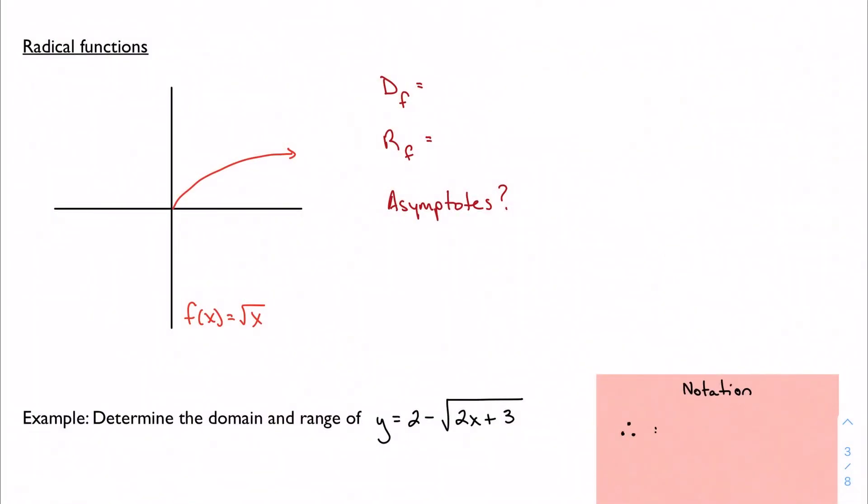So we're moving on to radical functions, and these are functions with any sort of root of x. But for now, we're just gonna deal with square roots. So if we consider the function y or f(x) equals the square root of x, we have a graph that looks something like this.